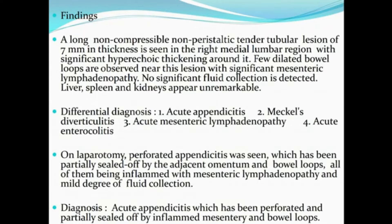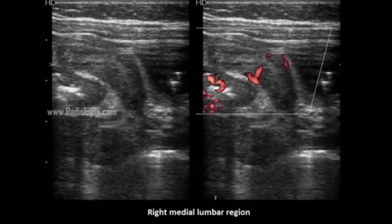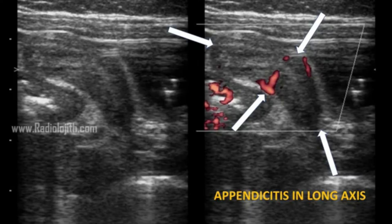Acute appendicitis is the most common surgical problem in all age groups except infancy, where it is very rare. However, the sonographic criteria of acute appendicitis remain the same — more than 6 mm in thickness — whether in infants, adolescents, or adults.